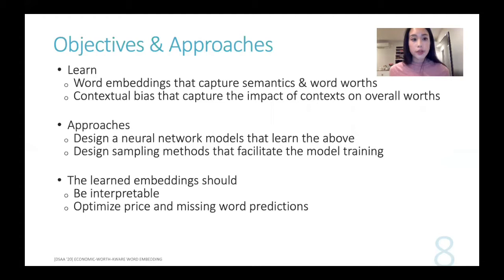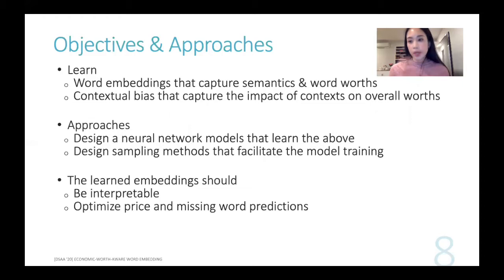So what are we trying to do after identifying these underlying properties that we want to capture for words? For the objectives, we want to learn word embeddings that capture both the semantic meanings and the economic worth that we talked about. You must have seen many word embedding or word representation learning models that have successfully captured semantics with many different kinds of variations. But we want to introduce this new idea of word worth and be able to capture it by model design.